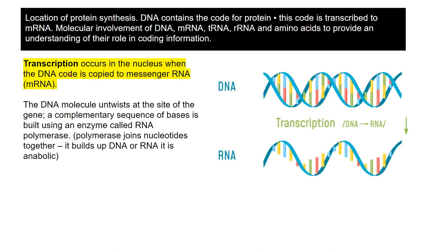The first stage of protein synthesis is called transcription. Transcription occurs in the nucleus - that's when the DNA's code is copied to messenger RNA. A copy of the DNA is made to a molecule of RNA. The DNA remains inside the nucleus and a temporary copy of messenger RNA is made, which will move out to the cytoplasm towards the ribosomes. The DNA molecule untwists where the gene is, and a complementary sequence of bases is built using an enzyme called RNA polymerase. The DNA molecule partially unzips and a strip of RNA is made based on the open sequence of the DNA strand.